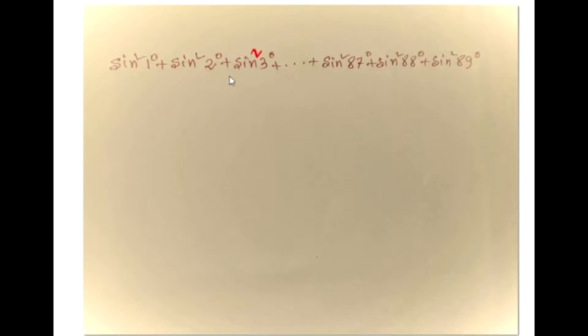Sin square 1 degree plus sin square 2 degree plus sin square 3 degree and so on. And the last three terms are sin square 87 degree plus sin square 88 degree plus sin square 89 degree.